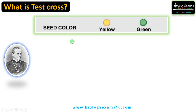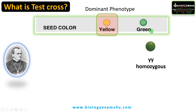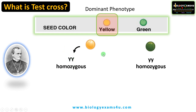Let's take a Mendelian trait as an example: seed color, yellow and green. Yellow is the dominant phenotype and green is the recessive phenotype. The genotype of green should be small y small y, and that should be homozygous to express this green color as it is a recessive trait. Whereas for the dominant phenotype yellow, there are two possibilities — it can be homozygous capital Y capital Y, or in heterozygous condition capital Y small y.